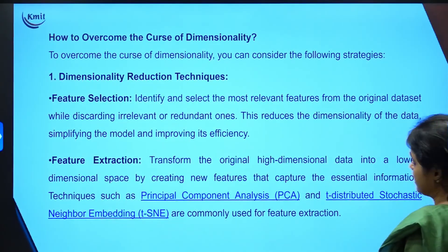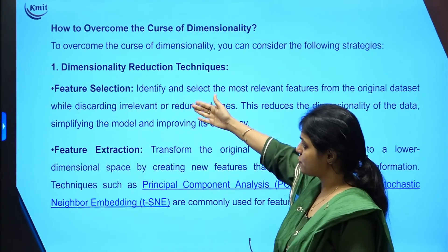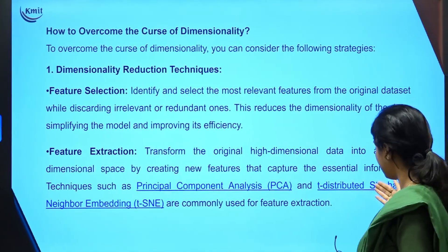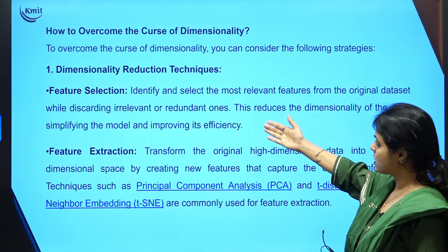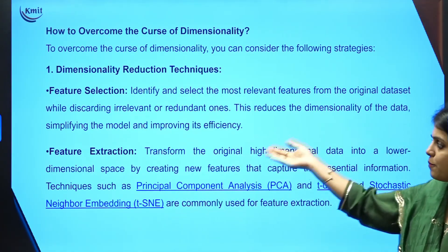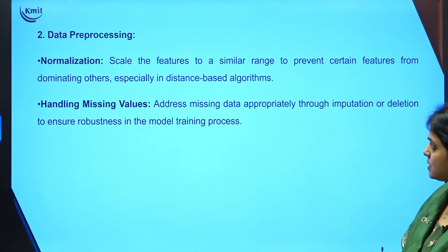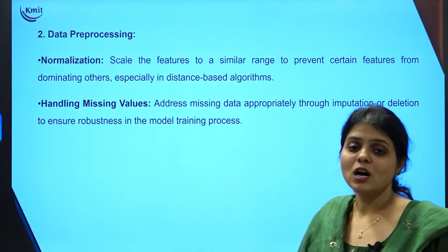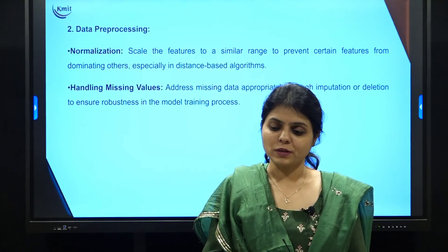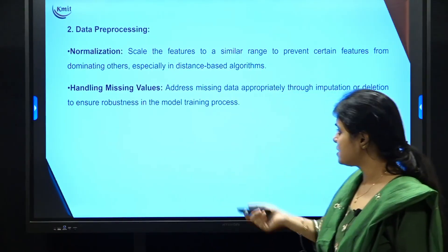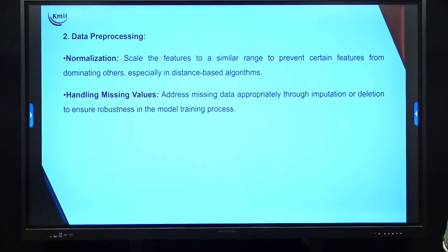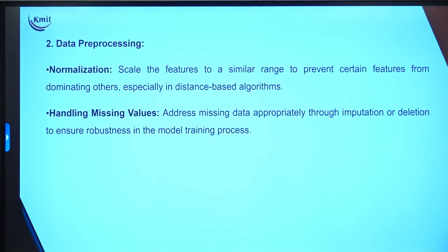There are two important strategies to overcome the curse of dimensionality. First is dimensionality reduction itself — using feature extraction methods like PCA, LDA, and TSNE, or feature selection methods like wrapper and embedding methods. Second is preprocessing the data — normalization and handling missing values come into picture, which we encounter every time we develop a model.